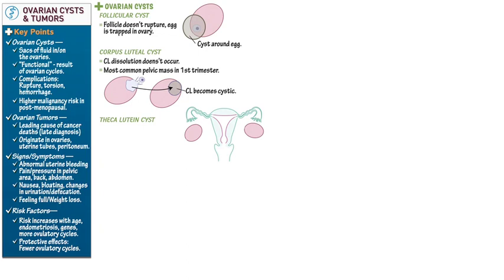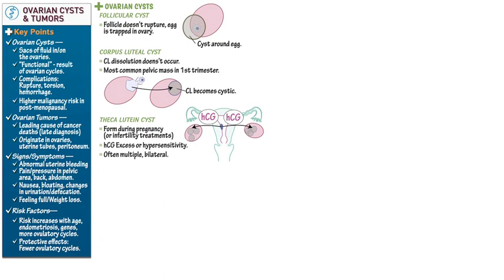Theca-lutein cysts are the result of human chorionic gonadotropin (HCG) excess or hypersensitivity. They form most often during pregnancy or infertility treatments. HCG is produced by the early placenta, and when excess HCG stimulates the nearby ovaries, it triggers the formation of multiple, often bilateral, cysts. Our notes include information on gestational trophoblastic disease, which is also characterized by tumors formed in pregnancy.